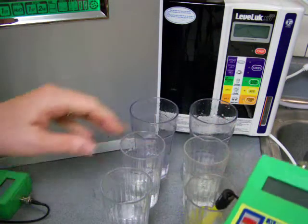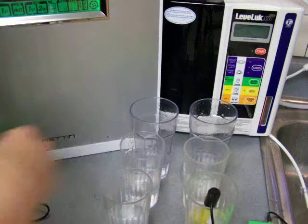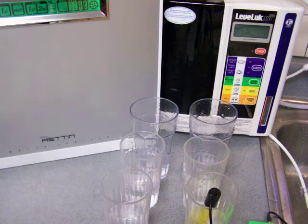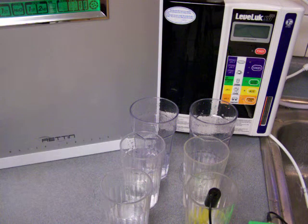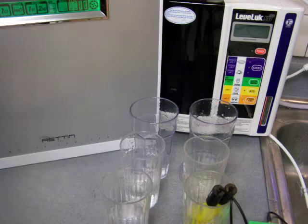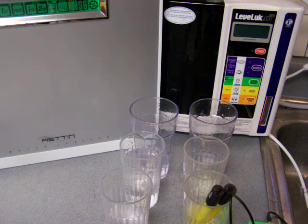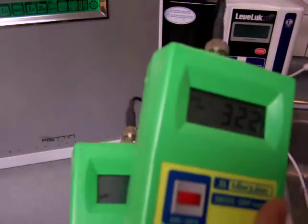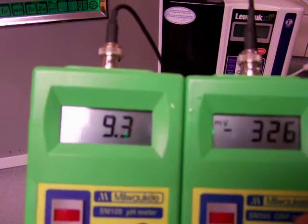So this one's the Kangen, I guess you can call it the Enagic, you can call it LoveLook SD501, whatever you call it, this one. And then this is at the fast flow rate, and actually this is really awesome. At that fast flow rate, to still be able to get that negative ORP that well is great.